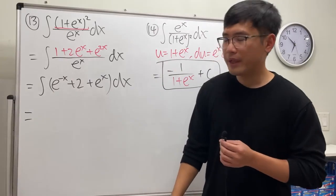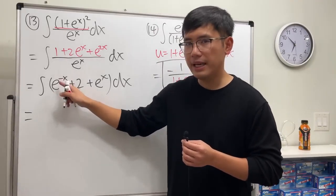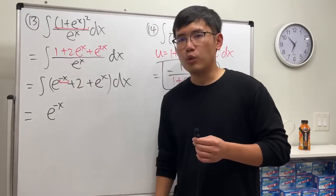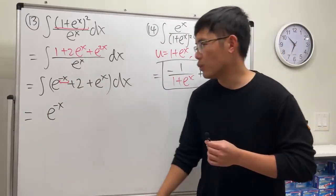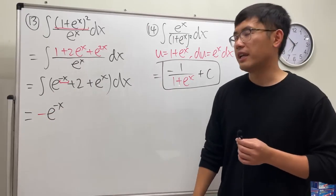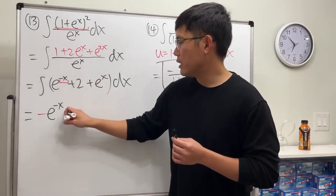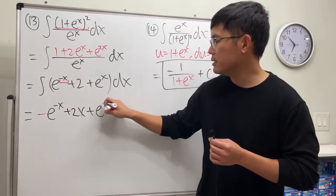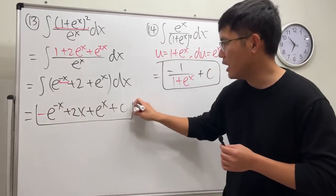Integrating e to the negative x, we get e to the negative x, but the derivative of negative x is negative 1, so divided by negative 1, so we have the negative right there. The integral of 2 is 2x, and lastly, the integral of e to the x is just e to the x, and then we are done, plus C.